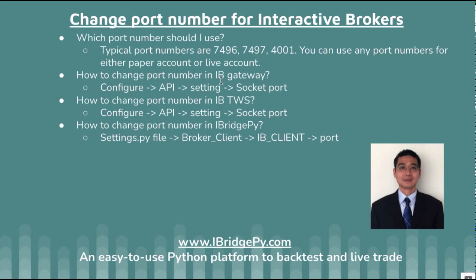So the first question: what port number should I use? The default port number from IB is 7496, 7497, or 4001, depending on the version you are using. You can use any port number for either a paper account or live account — no difference — as long as the port number in the Gateway or TWS matches the port number in iBridgePy. Then iBridgePy can communicate with IB Gateway or TWS. Any port number works as long as they match.